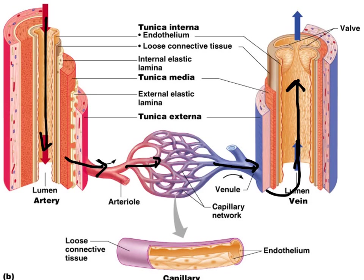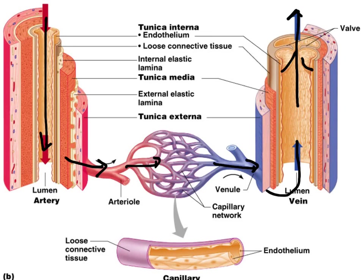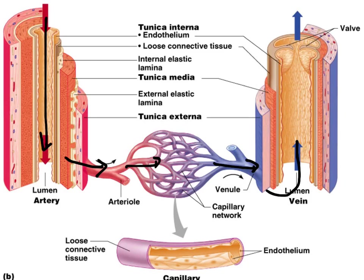The muscles squeeze the wall of the blood vessel, which forces the blood up. Especially in the legs, once the blood has left one area it would normally be pulled back down by gravity. But because veins have valves, once the blood has left one area the valves close, preventing the blood from going back into the space it was before. Veins are the only blood vessel type that contain valves — arteries and capillaries do not have them.